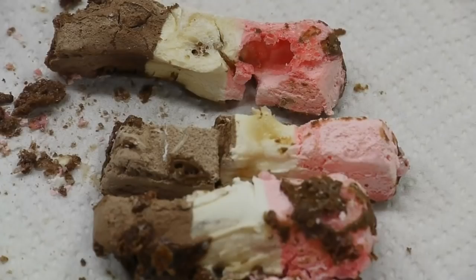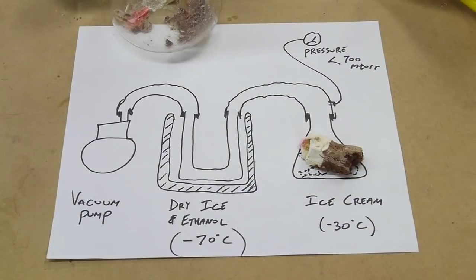Lucky for us, water has a property that will allow us to get the water out without letting it melt, and this is called sublimation. By lowering the pressure on the piece of ice cream we can get the water to go straight from solid to gas.